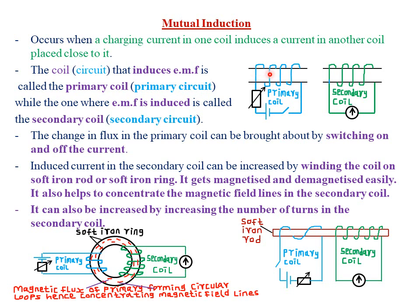Whenever a conductor is carrying current, it has a magnetic field around it. Because this primary coil has some current coming from the cell — when you close the switch, the current flows through the coil — it means the coil has a magnetic field around it. So when you switch on and off this circuit, that magnetic field around the conductor is going to interact with the conductor at right angles. Therefore, we expect some EMF to be induced in the secondary coil.